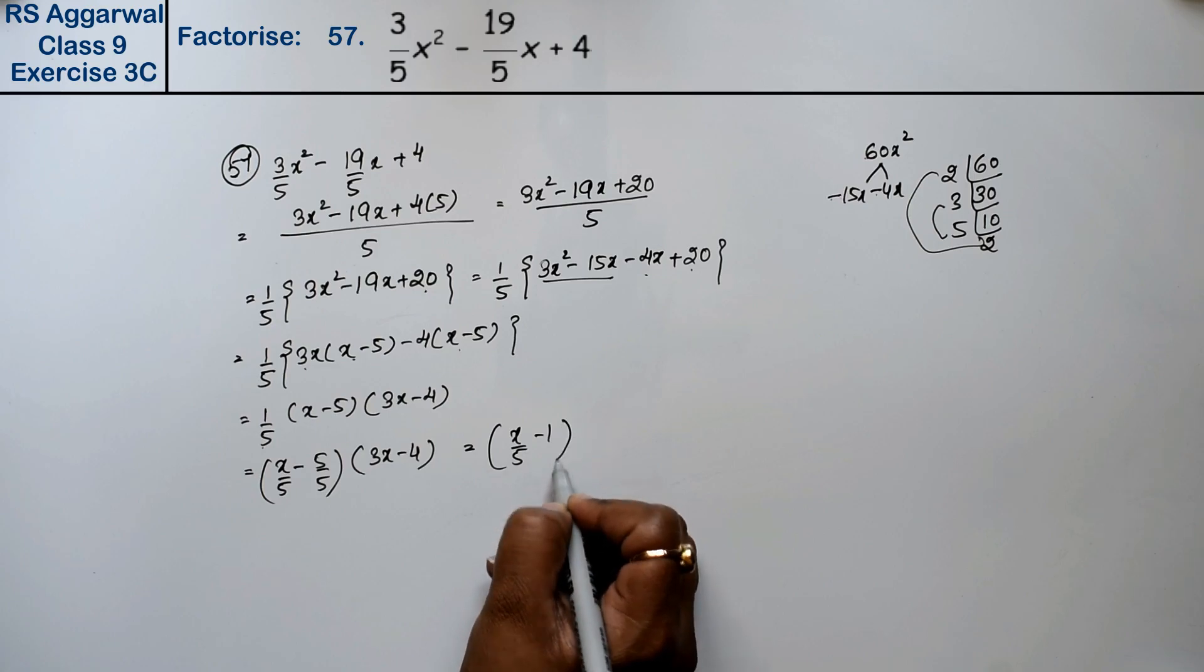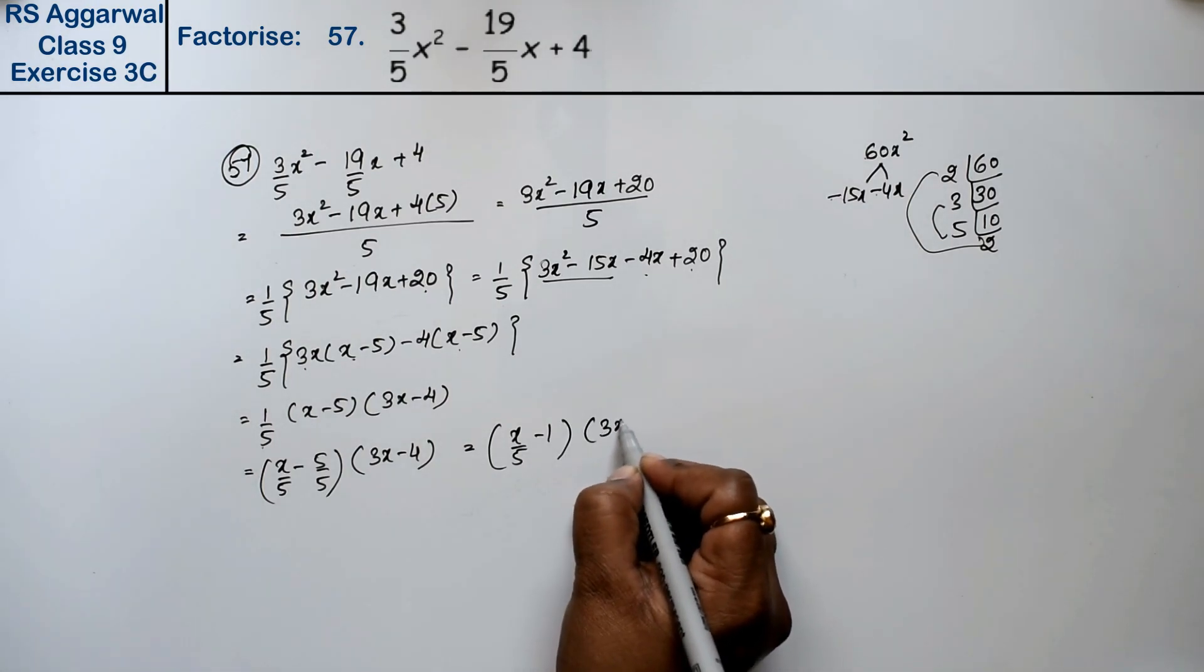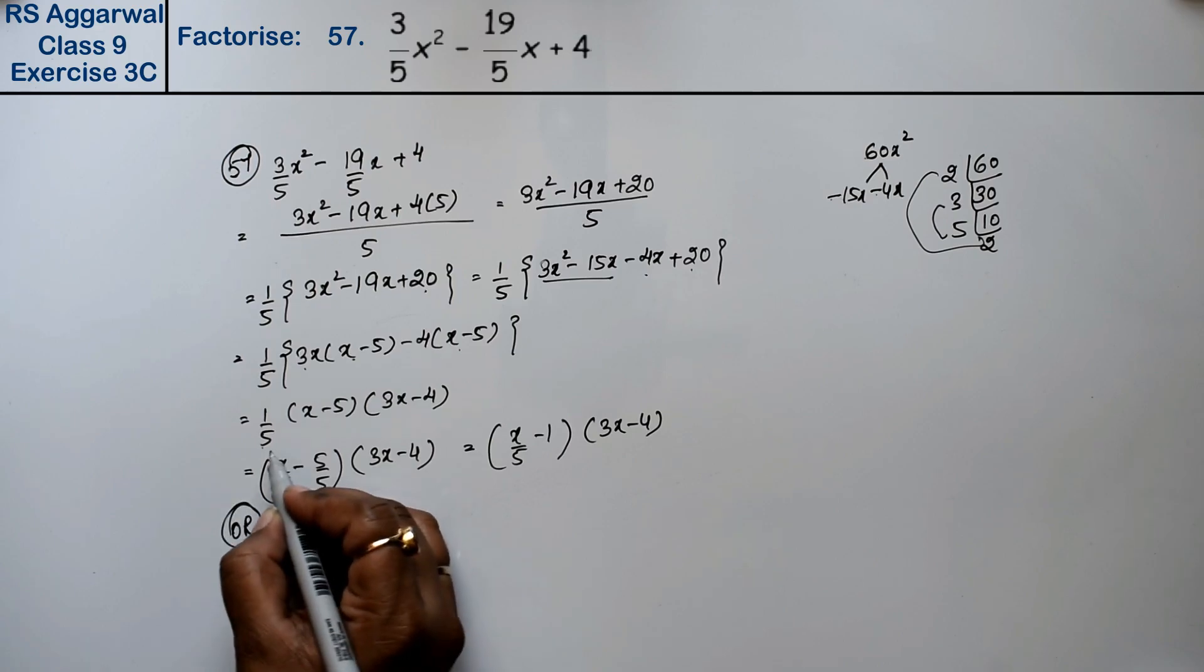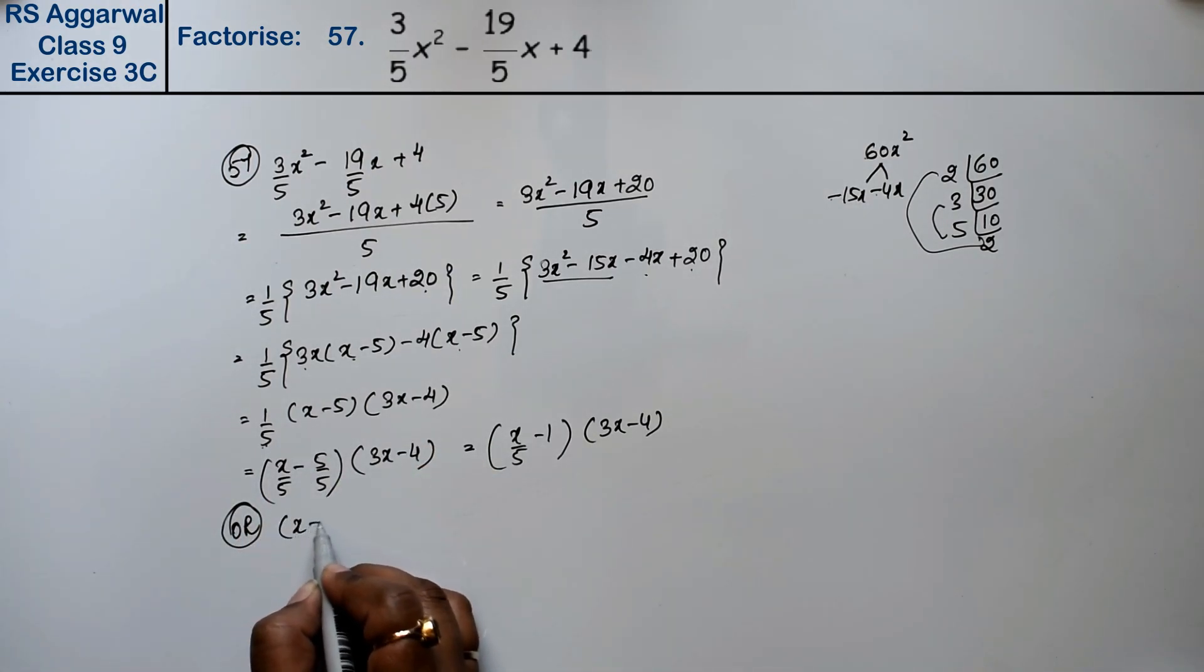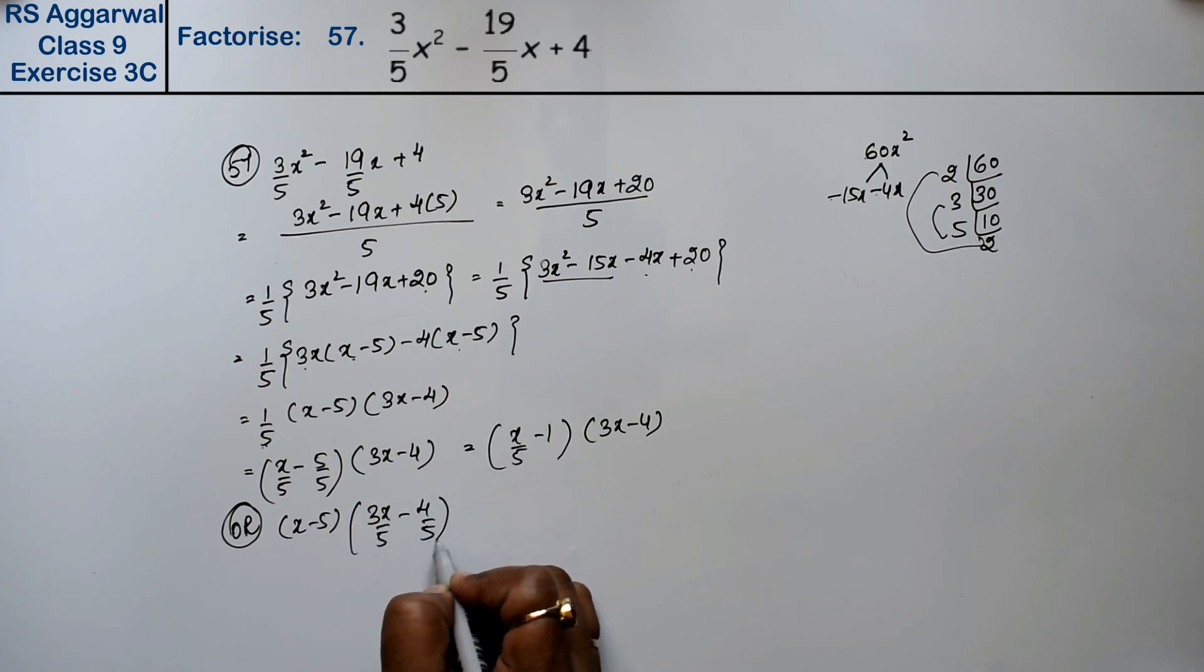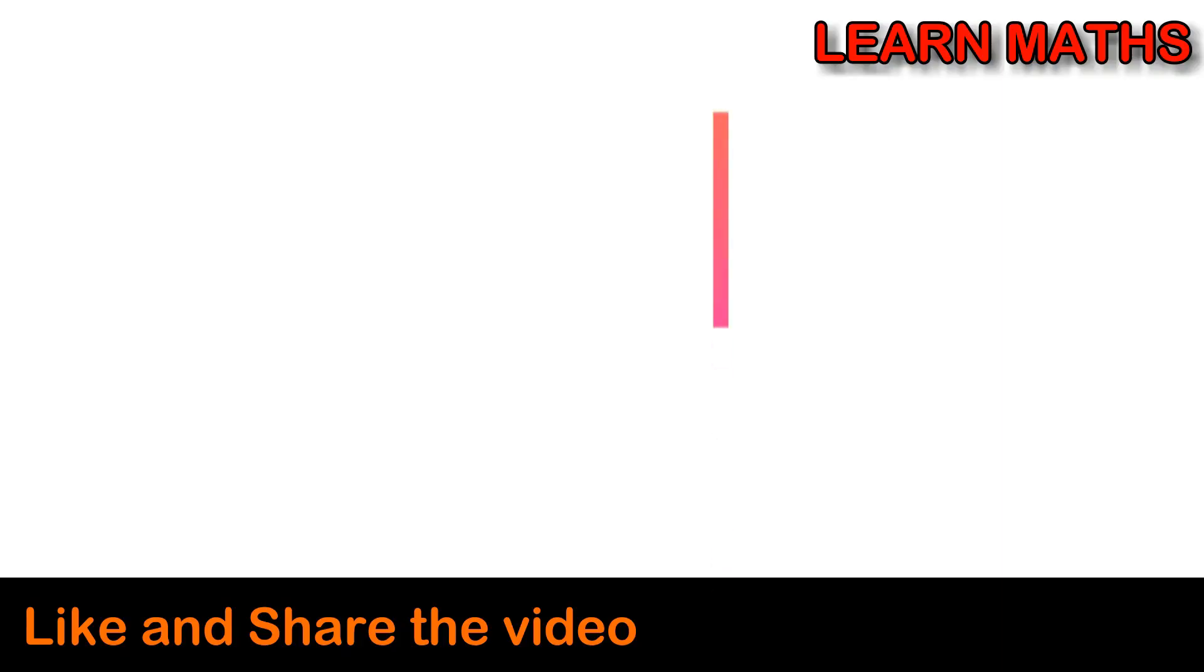Or if you want to do the multiplication differently, then (x - 5) as is times 3x/5 minus 4/5 is the answer. Thank you.